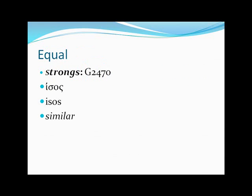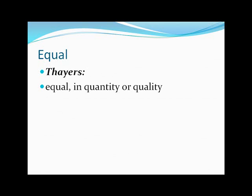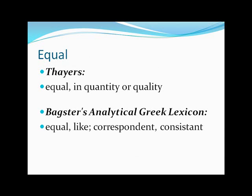The second word we will be looking at, and the final one, is the word 'equal,' Strong number Greek 2470 — for those who want to look it up for themselves. It is Isos, which means similar according to Strong's definition. Thayer's Lexicon says: equal in quantity or quality. So it can be equal in one of those two respects.